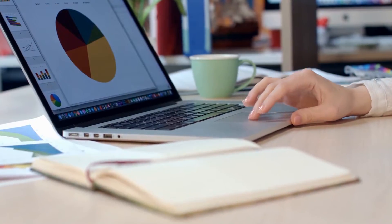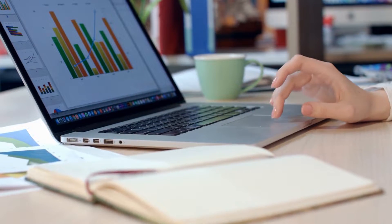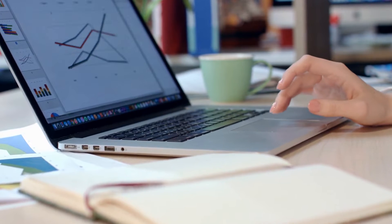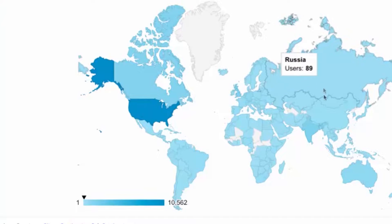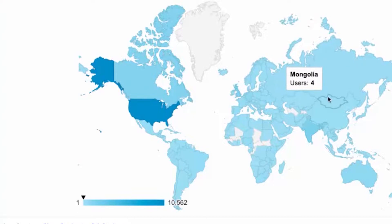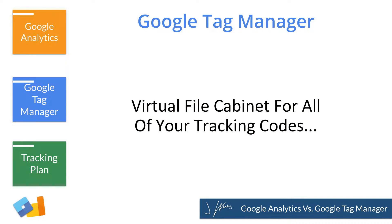The first thing you would want to do is install Google Tag Manager, which is the second tool we're talking about here. Now Google Tag Manager is almost nothing like Google Analytics. Google Analytics is all about collecting data and helping you understand how your site visitors are behaving, telling you where traffic came from and which traffic sources are working best for you. Google Tag Manager, on the other hand, is just a file cabinet — that's it. It doesn't do anything other than that.